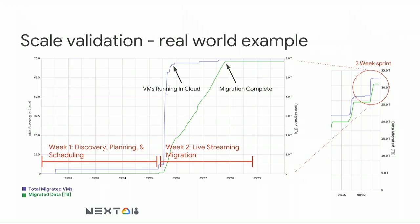This is an example sprint migrating about 70-plus machines in one go. The graph shows the number of machines running and how long it took to be live in the cloud. Within about two hours, the entire set of machines across all migration groups and tiers were up and running. Within the next day and a half, data was migrated in the background — but that doesn't prevent the application from running, meaning you can be live in the cloud in just minutes regardless of data size.